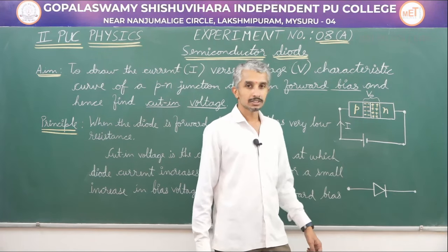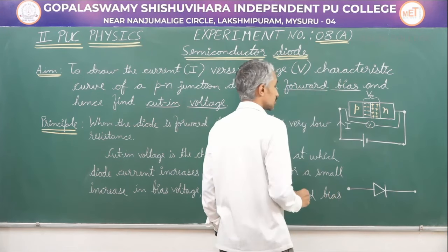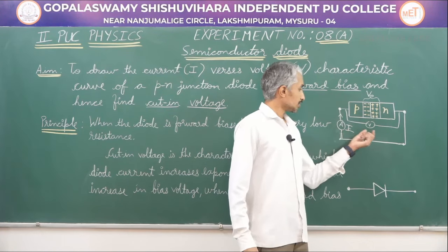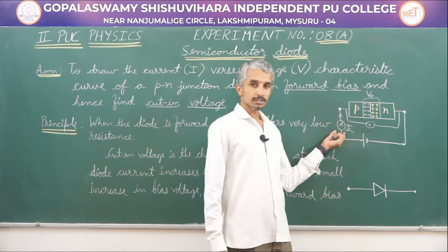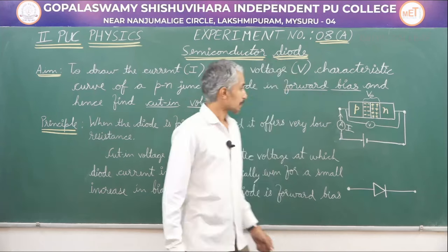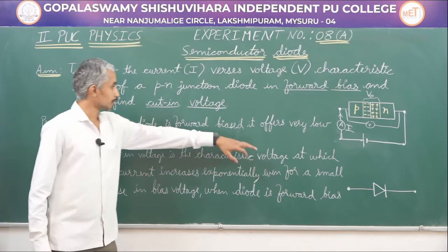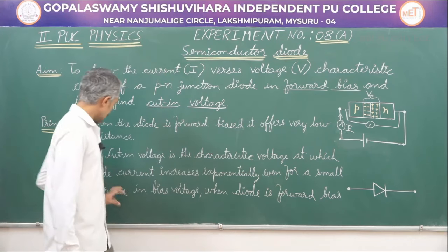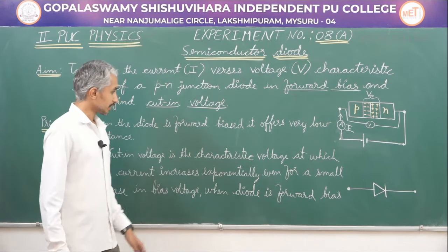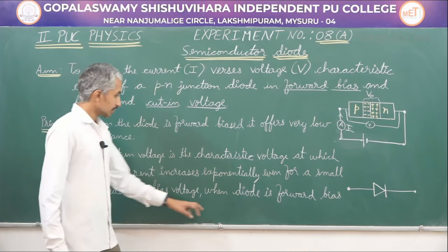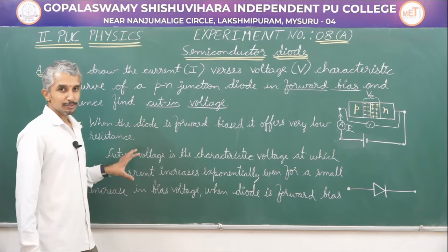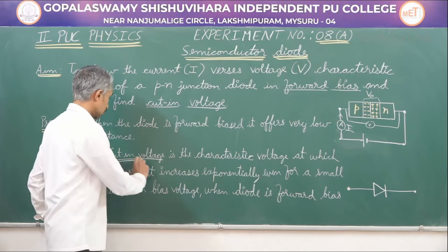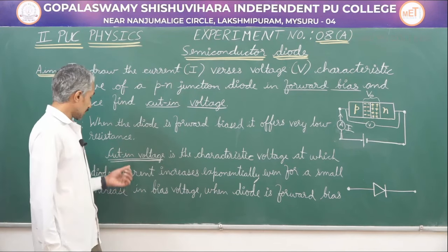We will connect a battery, a voltmeter across the diode, and an ammeter to measure the current. We will be taking readings of current versus voltage and find out when the current increases as voltage increases. The principle states: when the diode is forward biased, it offers very low resistance, and cut-in voltage is the characteristic voltage at which diode current increases exponentially even for a small increase in bias voltage. We will see that current increases after crossing a certain voltage, which is called cut-in voltage.